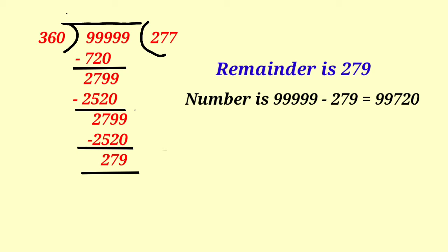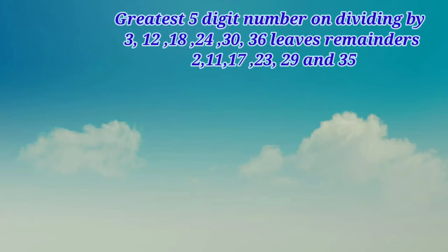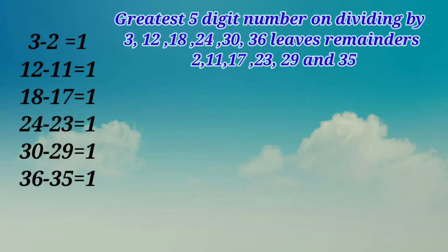On subtraction the result is 99,720. But one more thing is given in the question: the greatest 5-digit number on dividing by 3, 12, 18, 24, 30 and 36 leaves remainders 2, 11, 17, 23, 29 and 35. So here we have to find out their difference. When we find their differences — 3 minus 2 is 1, 12 minus 11 is also 1, 18 minus 17 is also 1 — and so on, the result is 1 everywhere.